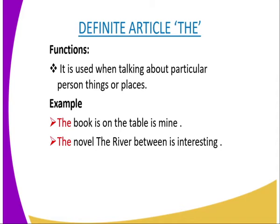Let us look at the functions of the definite article 'the'. It is used when talking about a particular person, things, or places. For example: 'The book on the table is mine.' It is used when talking about a particular person, things, or places.